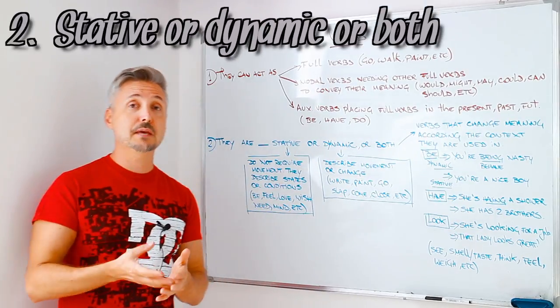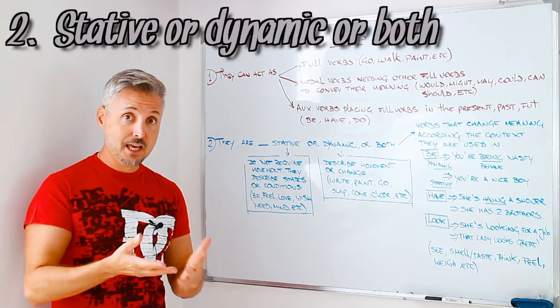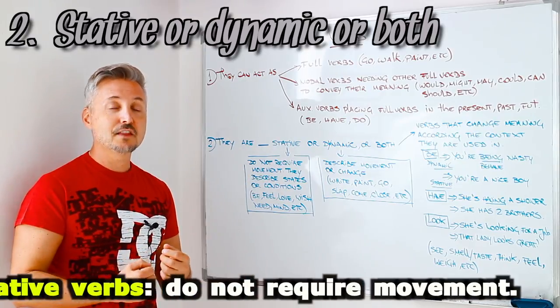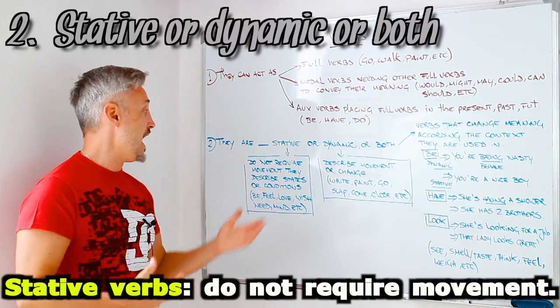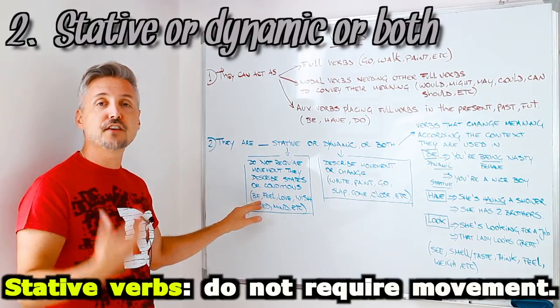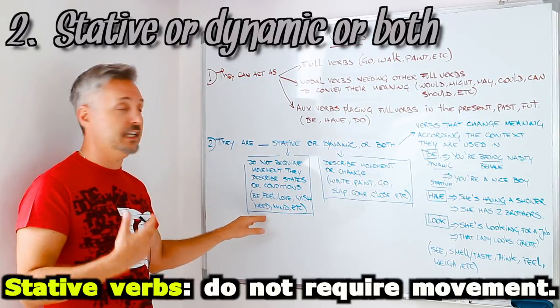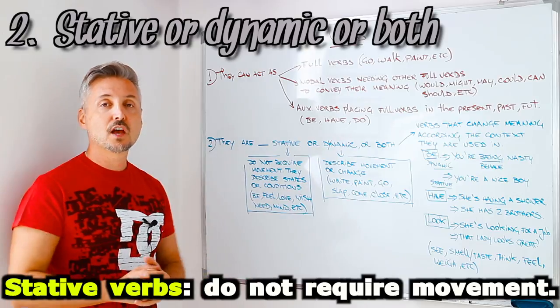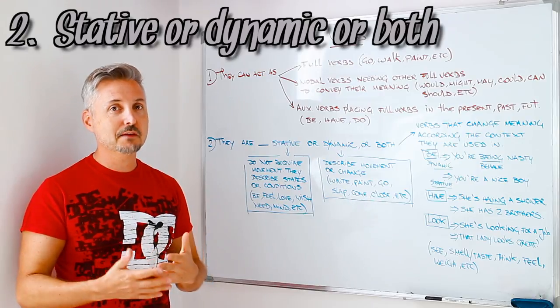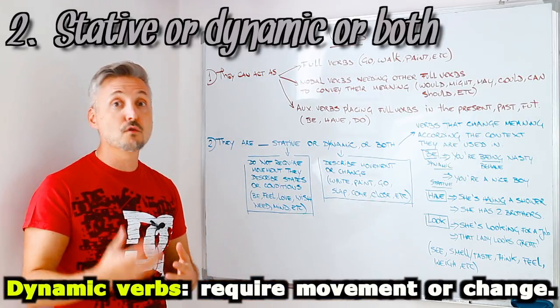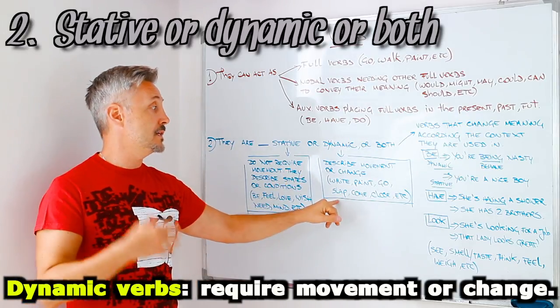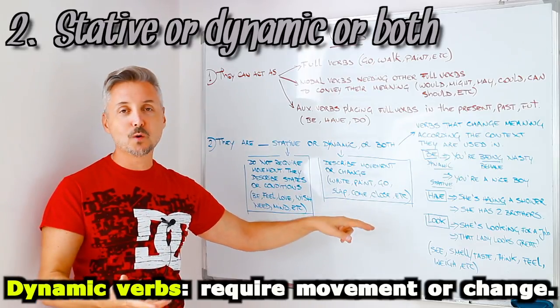You know that verbs can be stative, dynamic, or even both. So, the stative verbs are, obviously, they don't require movement. They describe states or conditions, just like be, feel, love, wish, need, mind, etc. Or, we said that we are going to talk about dynamic verbs. And these dynamic verbs are, obviously, the ones that require movement or change. So, write, paint, go, slap, come, close, etc.